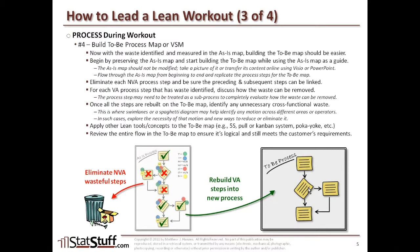When you build this, try to review the entire to-be process map with the entire team and make sure the whole flow is logical and meets the customer's ultimate expectations and requirements. Also try to review that map with stakeholders who aren't in the workout. For those not in the meeting, especially critical stakeholders, make sure they also agree. It may be necessary to reach out to experts in areas affected upstream or downstream to make sure you're not harming them. Something identified as non-value-added to you may actually be value-added for someone downstream. Account for that in your to-be process to make sure it's the right process design.